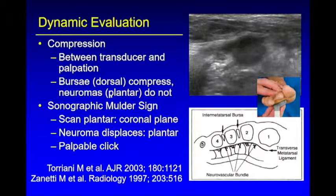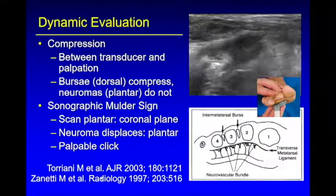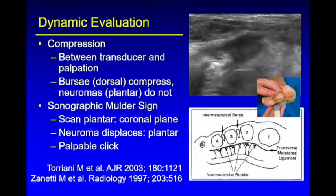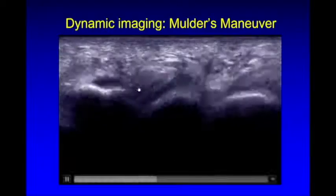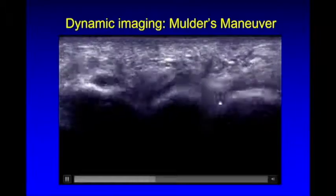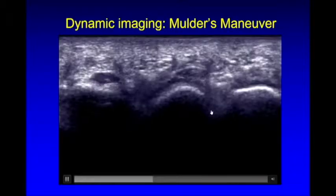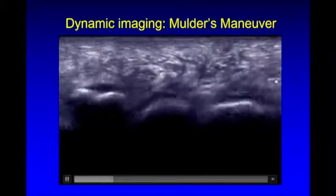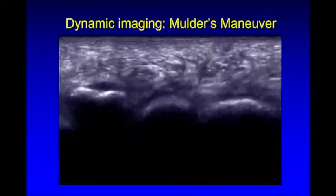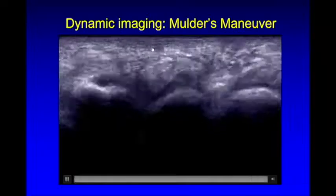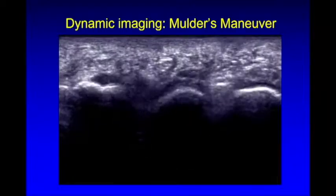The second aspect of dynamic evaluation is the sonographic Mulder's sign — for me, the most important maneuver when looking at Morton neuromas. You squeeze the foot from side to side, the metatarsal heads come together, and the neuroma snaps or moves in a plantar direction. I scan from the plantar aspect because the neuroma is pushed toward the transducer. Here are the metatarsal heads with a normal interspace — you can appreciate the heterogeneous appearance, which is why calling a tiny neuroma may be difficult. By squeezing the foot, you can see the neuroma moving plantarly; it's non-compressible, so it's not a bursa. With this dynamic maneuver, you can feel the click, and the patient will confirm it creates symptoms.